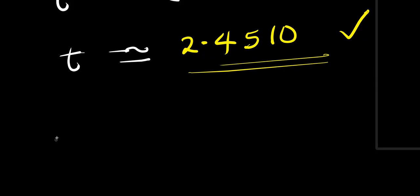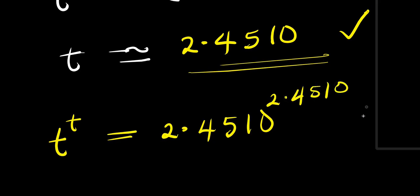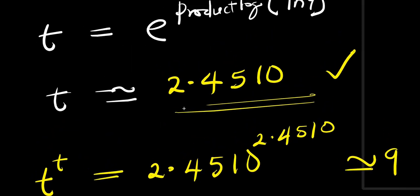So, if you have t to the power of t, this simply means you have 2.4510 to the power of 2.4510, and this will give you an approximate value of 9. You can test this out. So that is it. And that is how you can actually get it right.